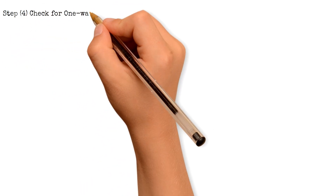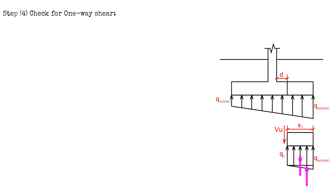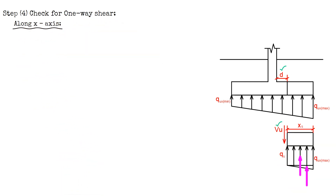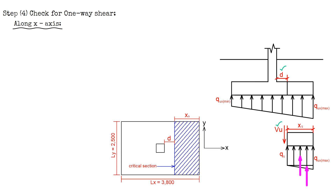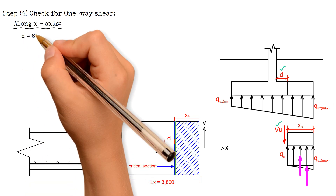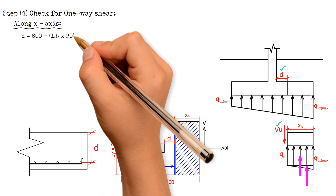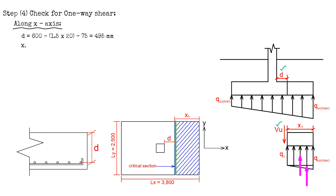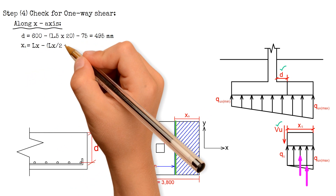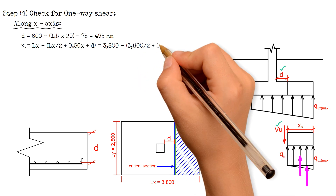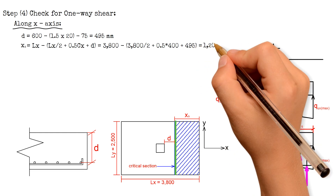Step 4 is to check if the section is safe for one-way shear, with the critical section located at distance d from the face of the column. For the X-axis direction, the effective depth d equals the thickness 600 mm minus 1.5 times the diameter 20 mm minus the concrete cover 75 mm, giving 495 mm. The distance x_s equals Lx minus (Lx/2 plus 0.5·cx plus d), giving 1,205 mm.